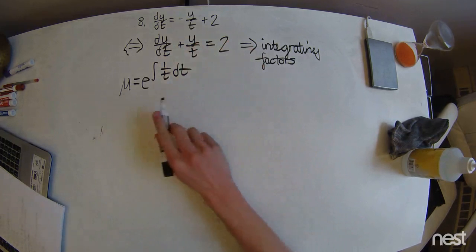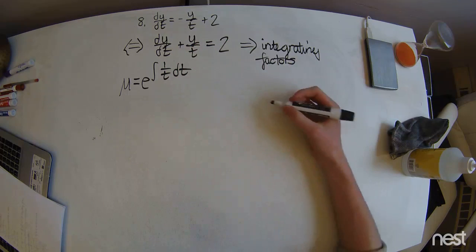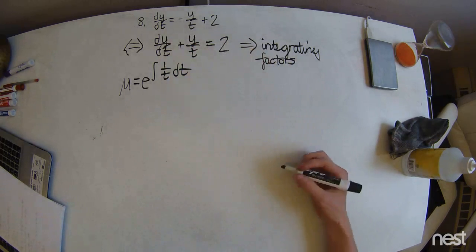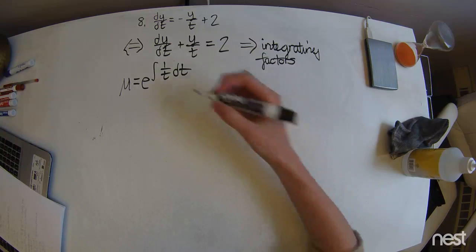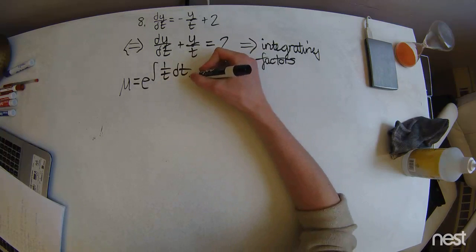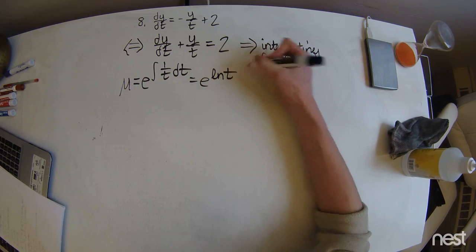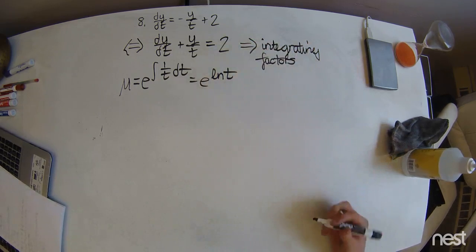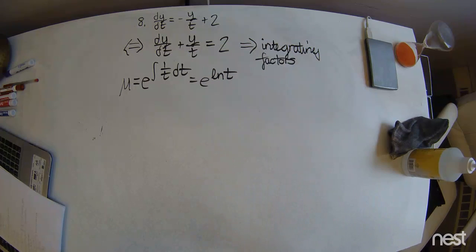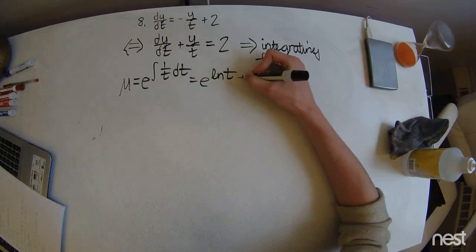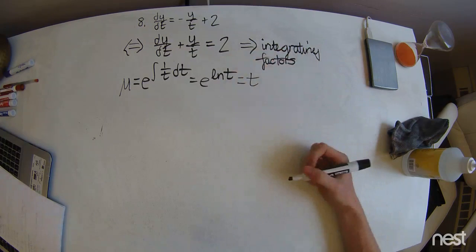We can pretty easily solve this. We know that the integral of 1 over t is just the natural log of t. And then we remember that the natural log is, of course, just log base e. So this actually equals t.